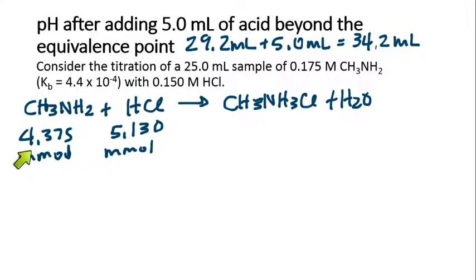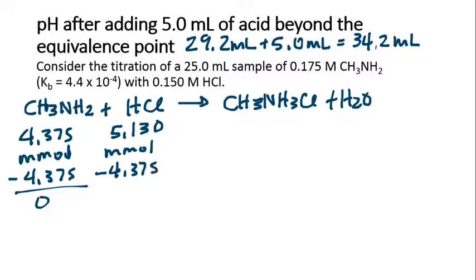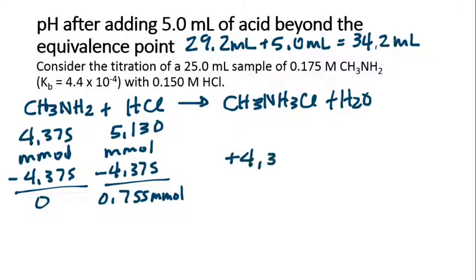These are in moles, and the base is now the smaller number of moles, so it is the limiting reactant. All of that's going to get used up, and we're going to have none left. We're going to use up the same number of moles of acid. So we've got 5.13 minus 4.375, giving us 0.755 millimoles of acid left. We're going to form 4.375 millimoles of the conjugate acid.